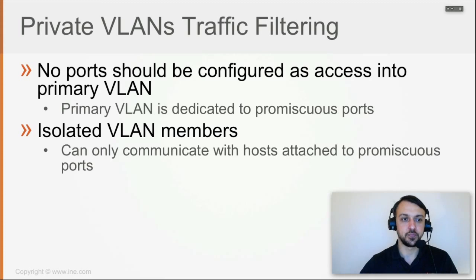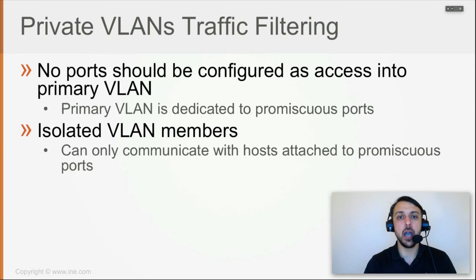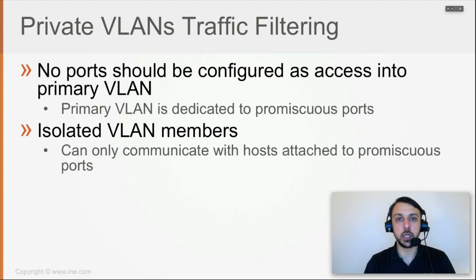The use case is that members connected to the isolated VLAN can only communicate with hosts attached to the promiscuous port. On one of those promiscuous ports, I have to have the default gateway of the segment attached. Because if I have five hosts within the VLAN and they belong to the secondary VLAN of isolated, they cannot speak with each other — it's like the protected port feature, but this feature spans across switches. That's the magic and advantage of it.